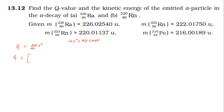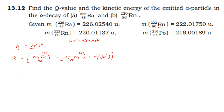The mass defect equals mass of parent nucleus Ra-88-226 minus mass of daughter nucleus, which is Rn-86-222, plus mass of the alpha particle, which is the helium nucleus He-4.